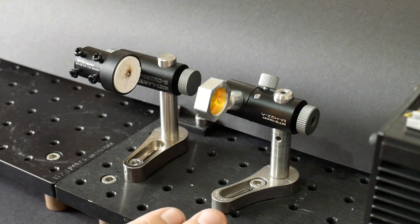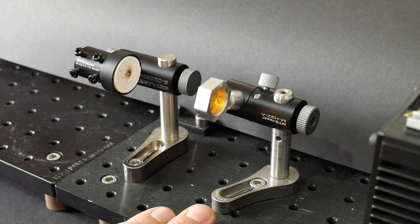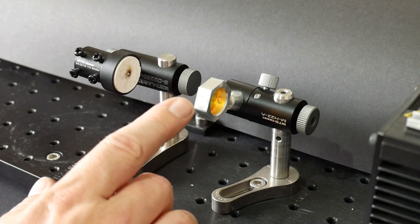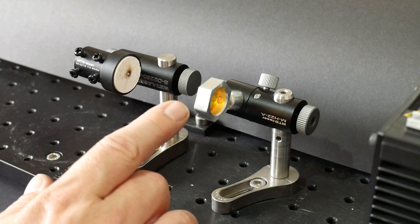To have the laser do useful work it is necessary to focus the beam. Ordinary glass or plastic optics cannot be used here as they are opaque at these wavelengths. Here I have placed a zinc selenide focusing lens into the beam path. Zinc selenide is used as it is transparent to long wave infrared.